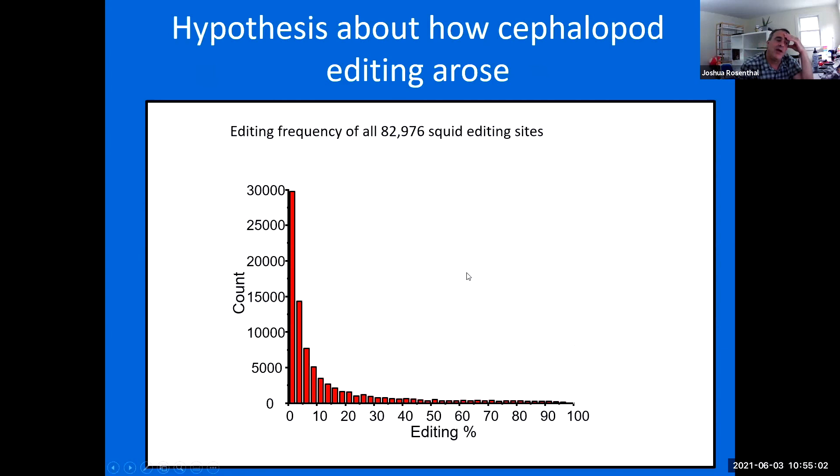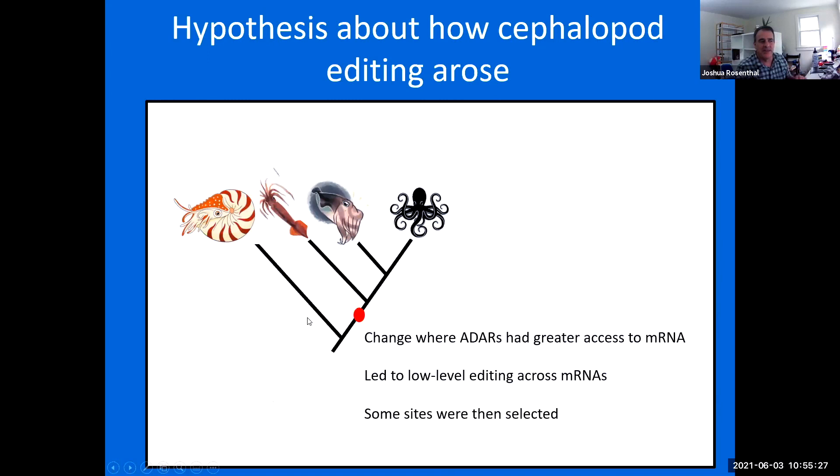To wind up, I just want to give you a quick idea of what our working hypothesis is on what's going on here evolutionarily. This is just an idea we're looking through to try to change. But if you look at all the editing sites in squid, you'll see that we have a tremendous number that are edited at very low percentages, but then a small number that get out and are edited at fairly high percentages. So what we think is somewhere evolutionarily between Nautilus and the coleoid cephalopods, a change happened, perhaps ADAR gained greater access to messenger RNA. This led to low level editing across structures that were in RNA and in sites where this was beneficial. Those were, in a few sites where this was beneficial, they were selected and have been selected or edited at greater and greater percentages by basically improving those structures over evolutionary time.